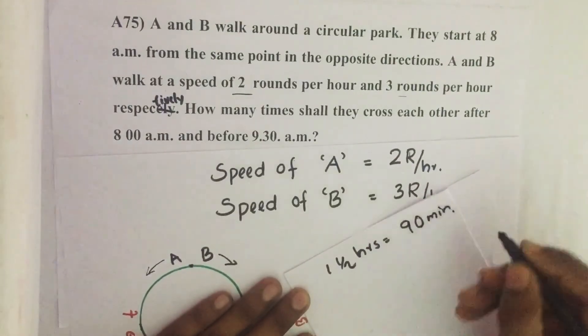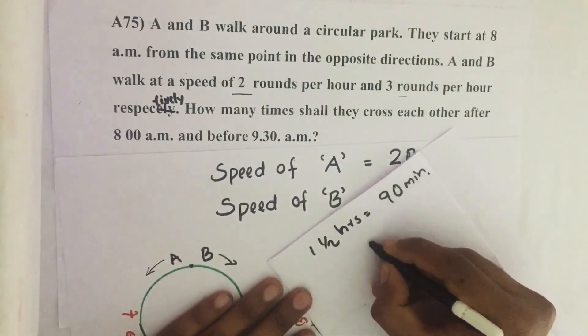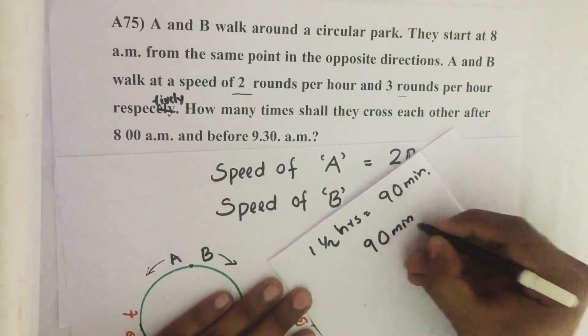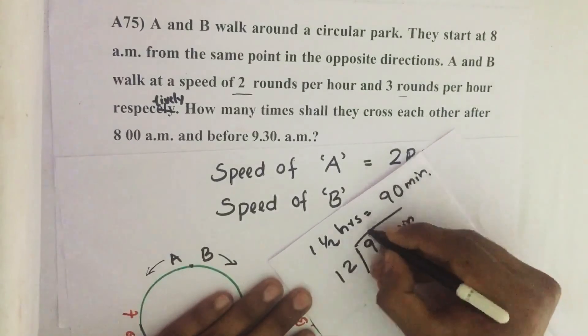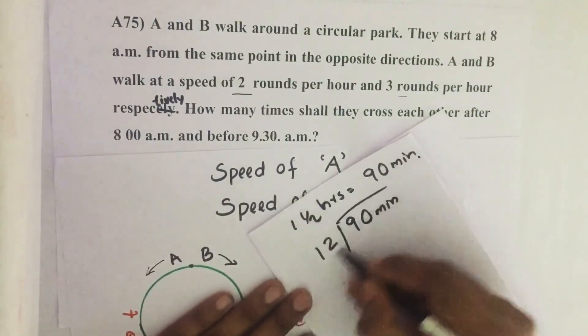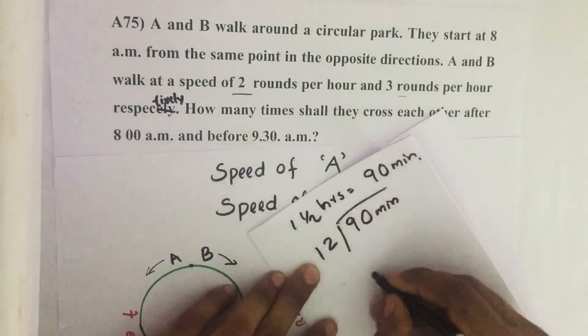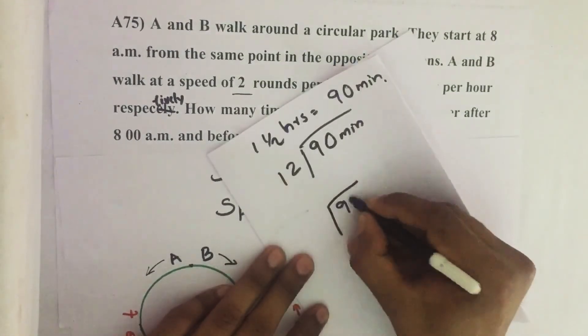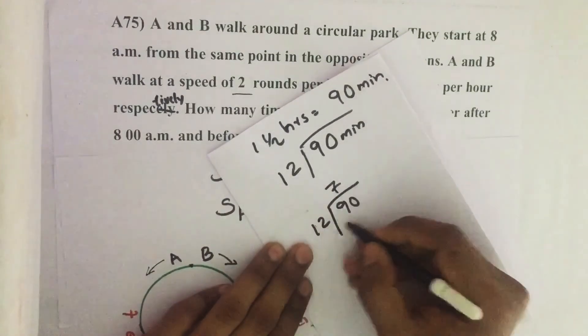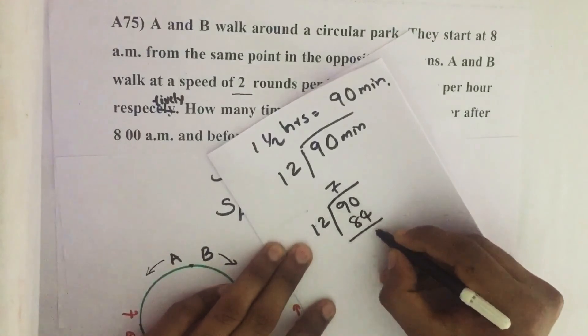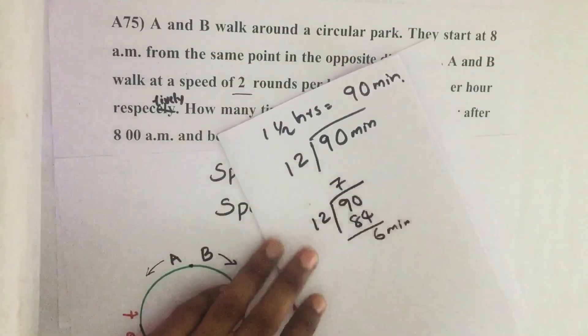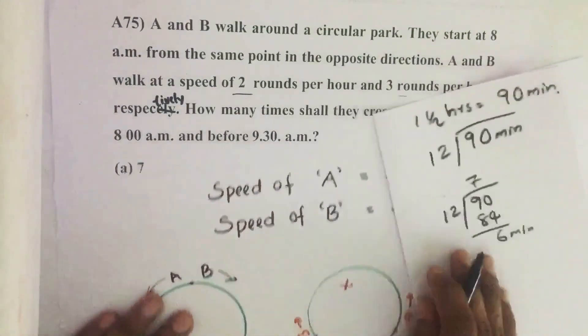Then how many 12 minutes are there in 90 minutes? So by dividing we get 90 divided by 12. 7 times 12 is 84, then 6 minutes. So they will meet 7 times between this interval. Our answer is option A, 7.